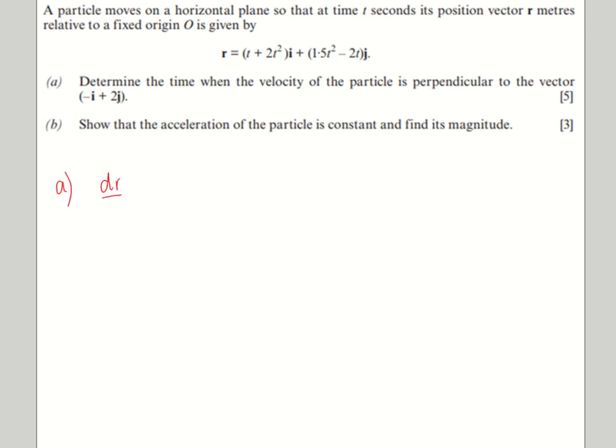So first of all we've got an expression for the position vector. We're asked for the velocity, so we need to differentiate. So part a, we're going to do dr by dt to find v. That's going to give us 1 plus 4t in the i-direction and 3t minus 2 in the j-direction.